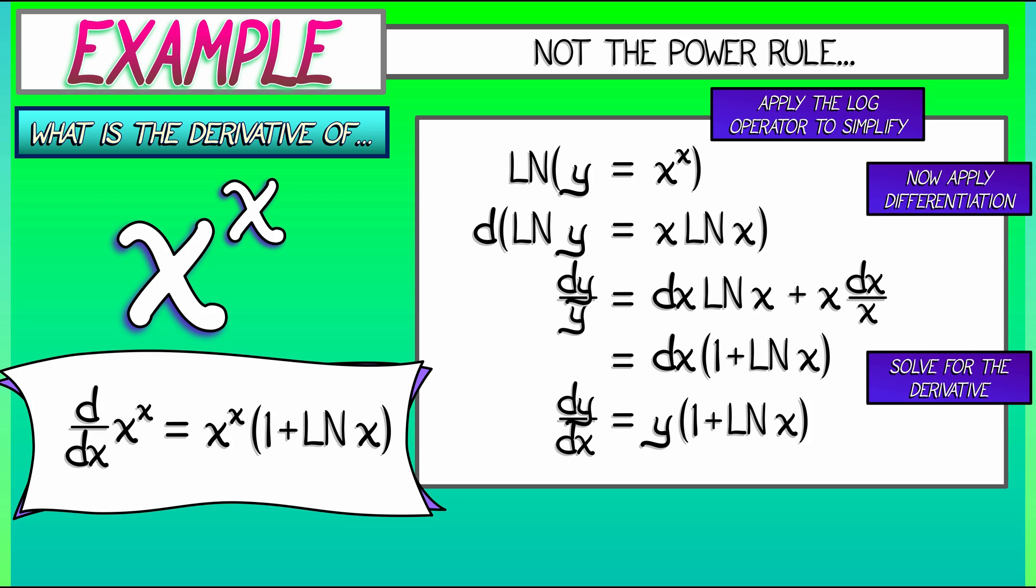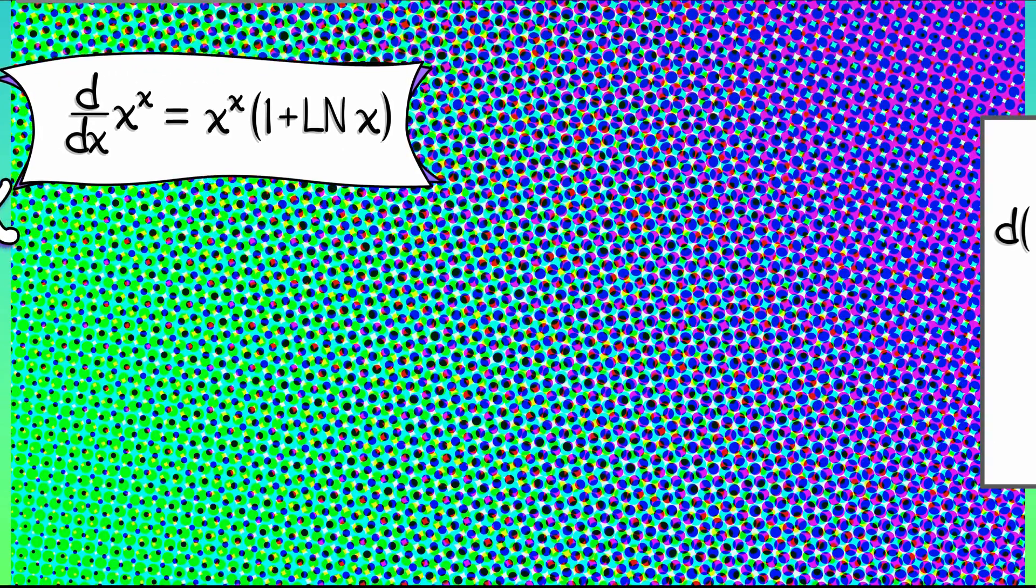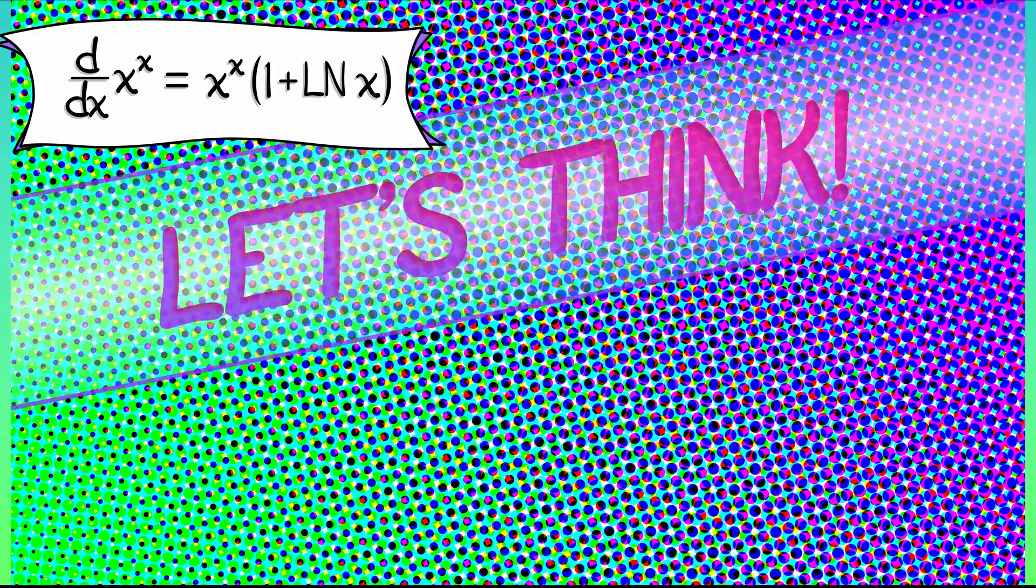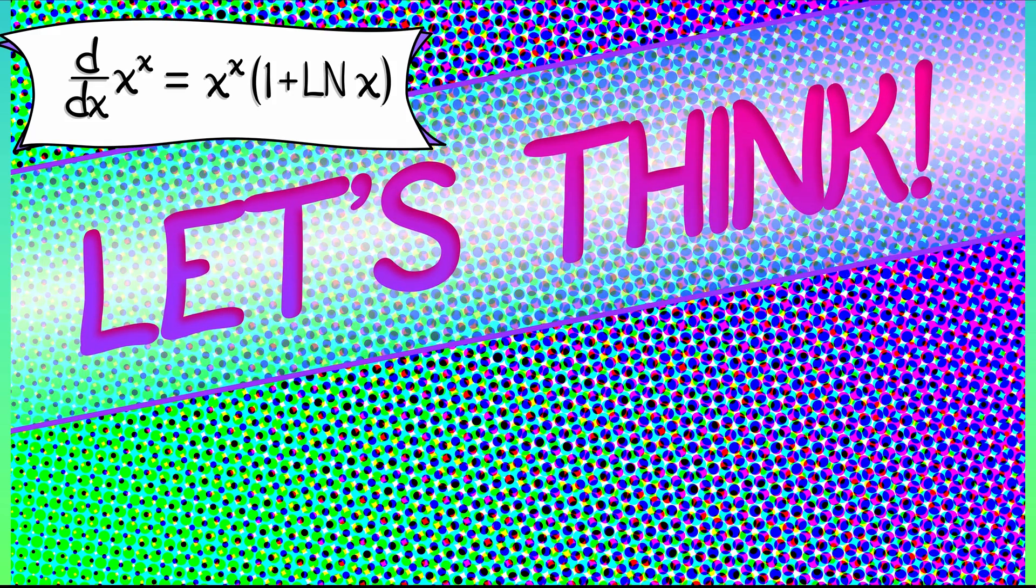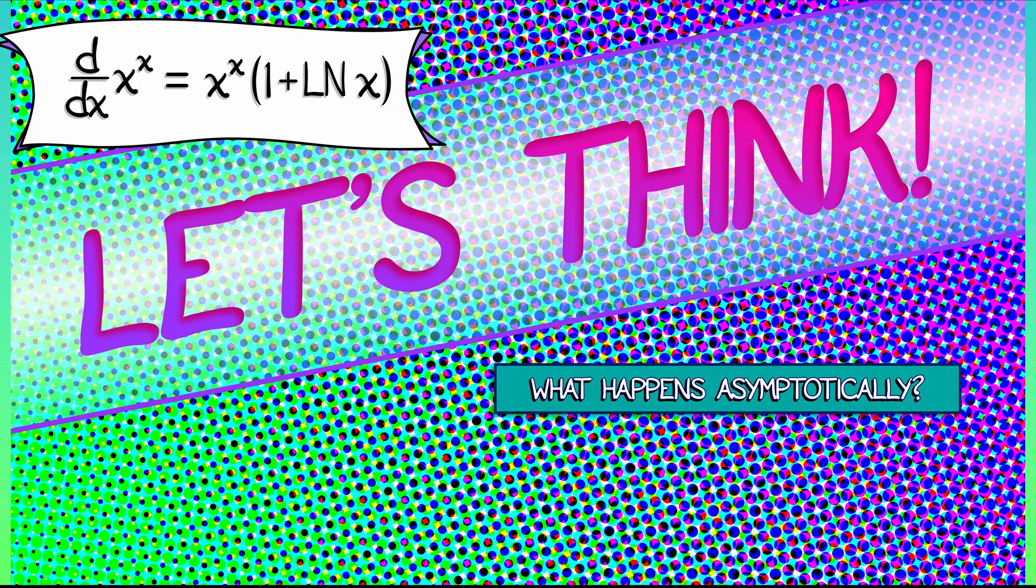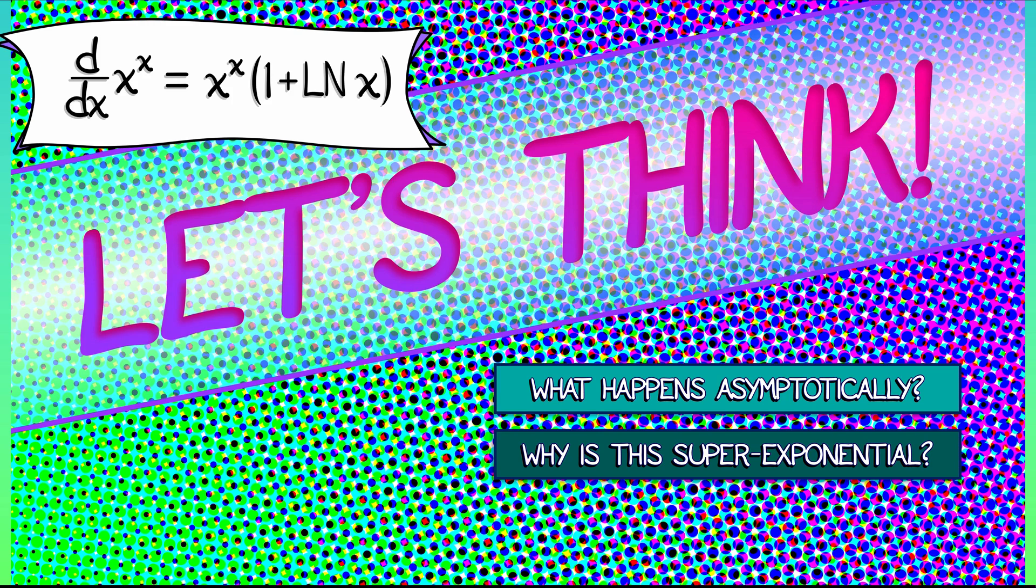And this actually makes kind of a lot of sense, right? Let's think about it. What's the derivative of e to the x? That's e to the x. The derivative of x to the x really can't be x to the x. It's got to be something bigger, because if we think about what happens asymptotically, x to the x has to be bigger than e to the x as x is getting large. So how much bigger than x to the x is the derivative of x to the x? Well, you've got that log of x term in there. That's kind of cool.